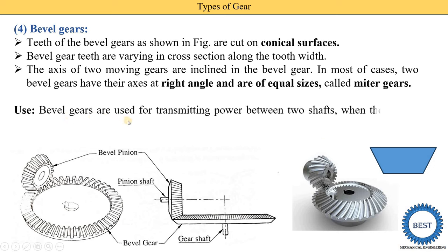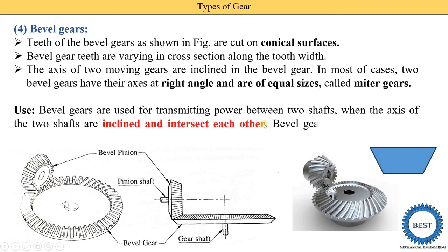Bevel gears are used to transmit power between two shafts when the axis of the two shafts are inclined or at right angles and intersecting, as seen in the diagrams. Bevel gears are widely used in automobiles — specifically in differentials of vehicles. The engine power is supplied to the gearbox, then to the propeller shaft, and after that the power is transmitted to the differential where bevel gears are used, and then to the rear wheels.